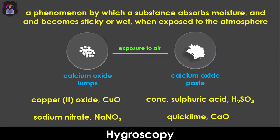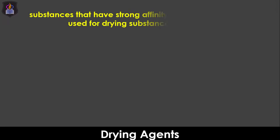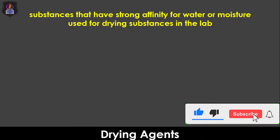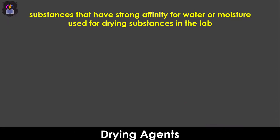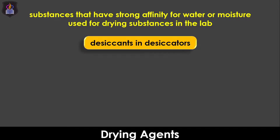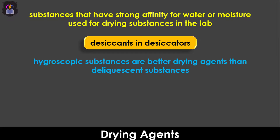One key use of deliquescent and hygroscopic substances is their use as drying agents in the lab. Drying agents, also called desiccants, are substances that have a strong affinity for water or moisture, used for drying substances in the lab. They are usually used for drying gases and also commonly used as desiccants in desiccators for keeping solid substances dry. Hygroscopic substances are more suitable drying agents than deliquescent substances because of their higher affinity for water.